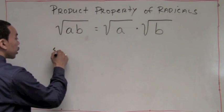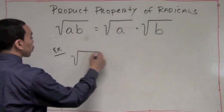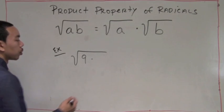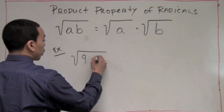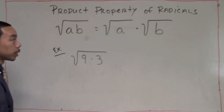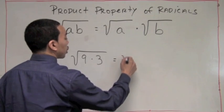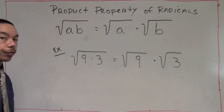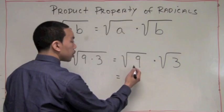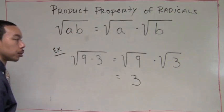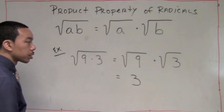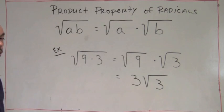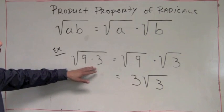To briefly demonstrate an example, let's take the square root of 9 times 3. Using the product property, it can be split up into two radicals: the square root of 9 times the square root of 3. We can further simplify because 9 is a perfect square — the square root of 9 is 3. We don't know the square root of 3 without a calculator, so we leave it, giving us 3 times the square root of 3.